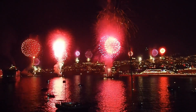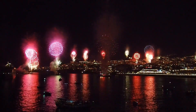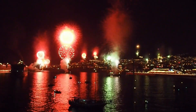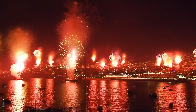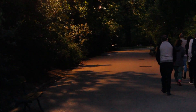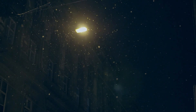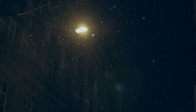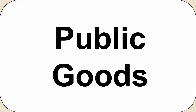Another example would be a public fireworks display around New Year's, because anybody can look up and enjoy the fireworks and just because I'm enjoying them doesn't mean you can't as well. So they're non-excludable and non-rivalrous. One more example would be streetlights — they light up the road for everybody, there's no barrier to use them, and me enjoying the light does not prevent somebody else from using that same light. Public goods are non-excludable and non-rival.